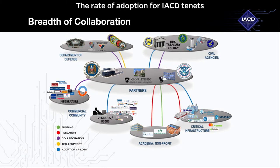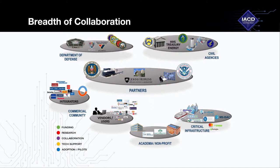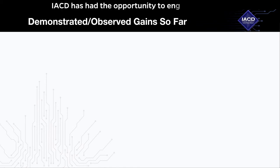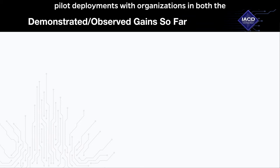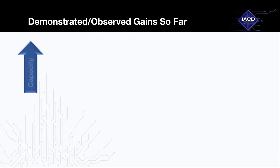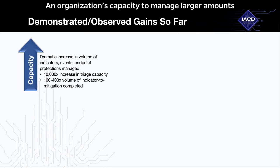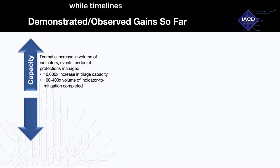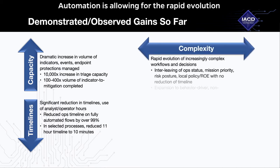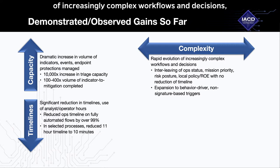The rate of adoption for IACD tenets, along with the strategy and framework it provides, continues to grow with each additional participant. For the past several years, IACD has transitioned out of pure research and development into actual applications in live environments. The impacts of successful deployments have been positive and significant — an organization's capacity to manage larger amounts of indicators, events, and endpoint protections has increased, while timelines to remediation of events has been reduced from hours to minutes. Automation is allowing for the rapid evolution of increasingly complex workflows and decisions, thereby freeing analysts to focus on real hard analysis and decision making.